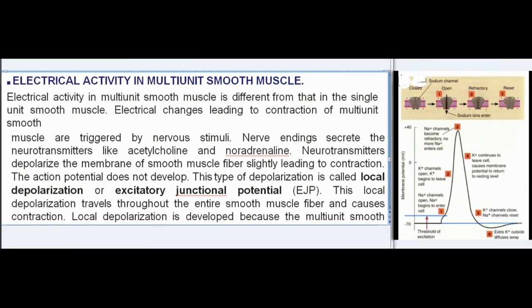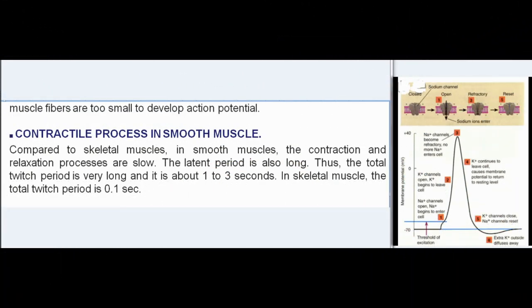Electrical activity in multi-unit smooth muscle is different from that in the single unit smooth muscle. Electrical changes leading to contraction are triggered by nervous stimuli. Nerve endings secrete neurotransmitters like acetylcholine and noradrenaline, which depolarize the membrane of smooth muscle fiber slightly, leading to contraction. The action potential does not develop. This type of depolarization is called local depolarization or excitatory junctional potential (EJP). This local depolarization travels throughout the entire smooth muscle fiber and causes contraction, as multi-unit fibers are too small to develop action potential.